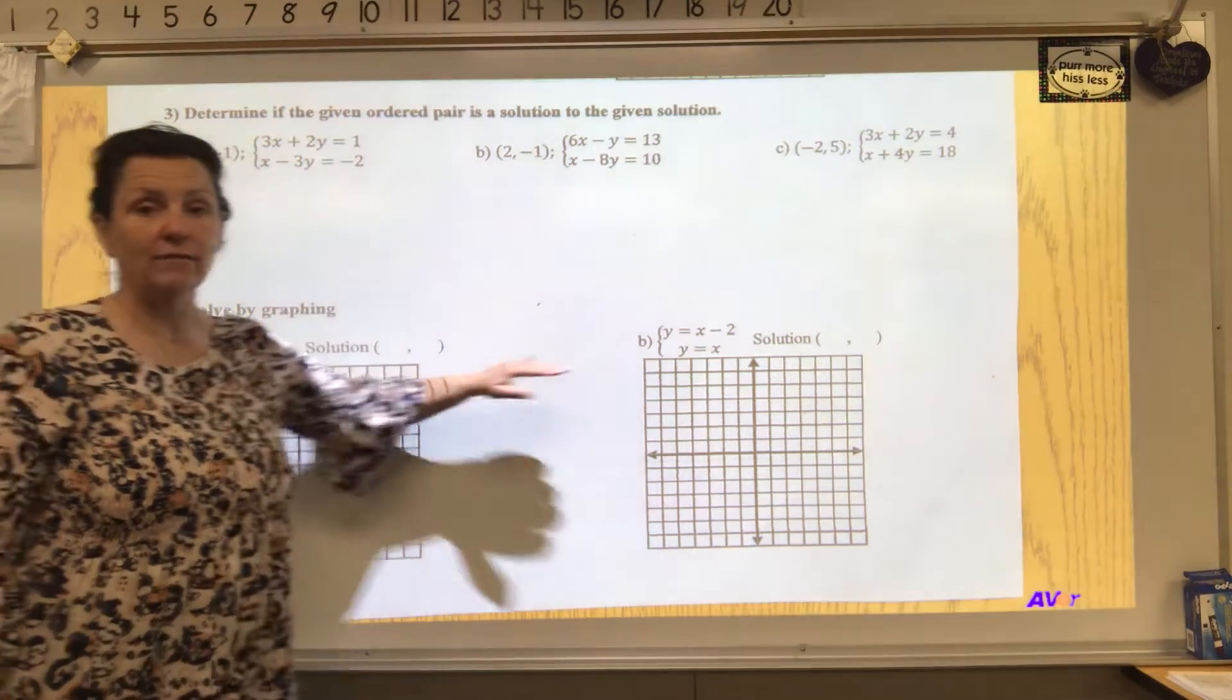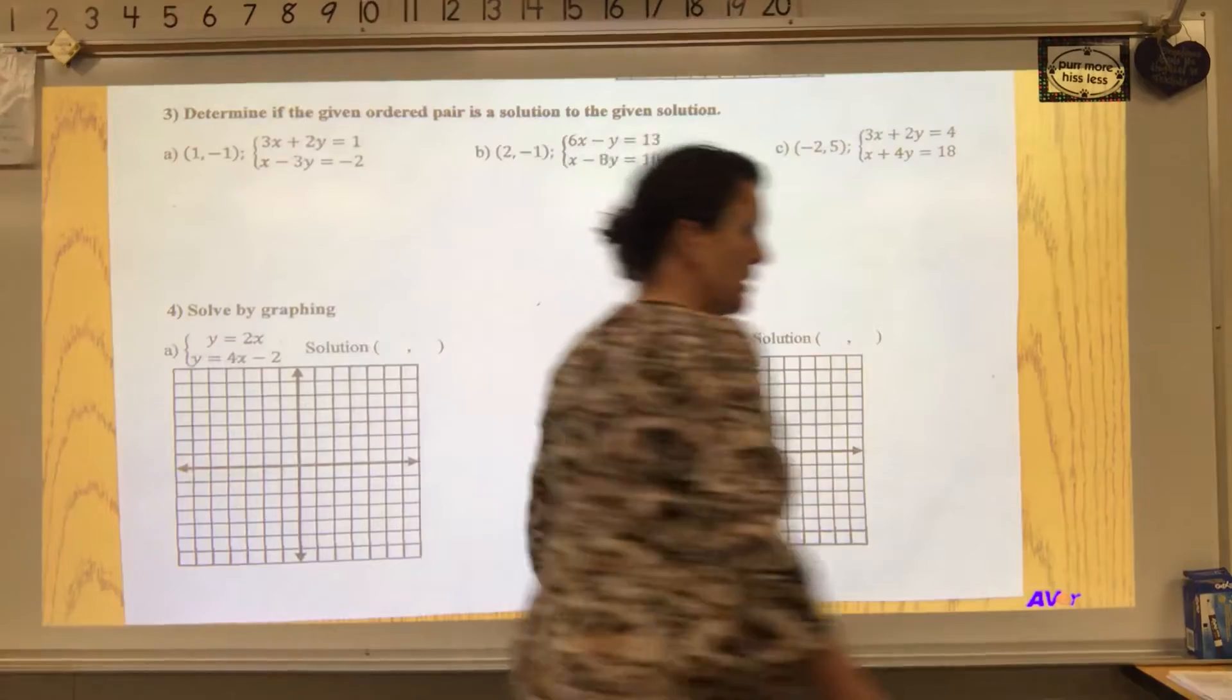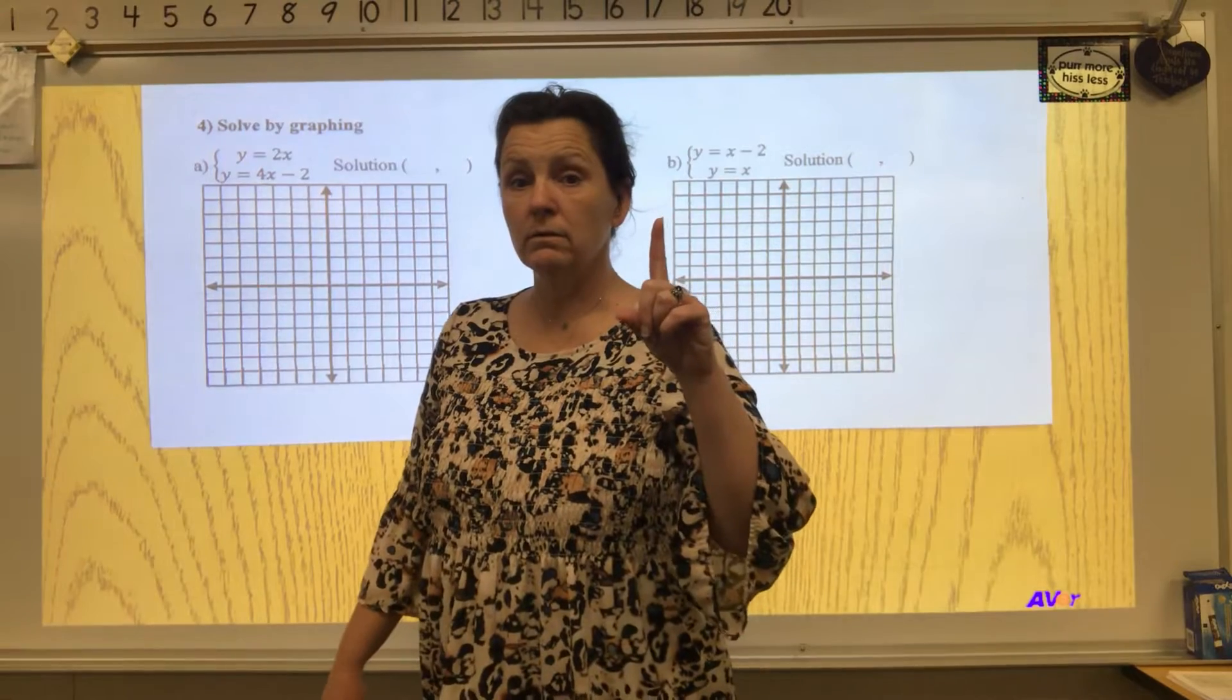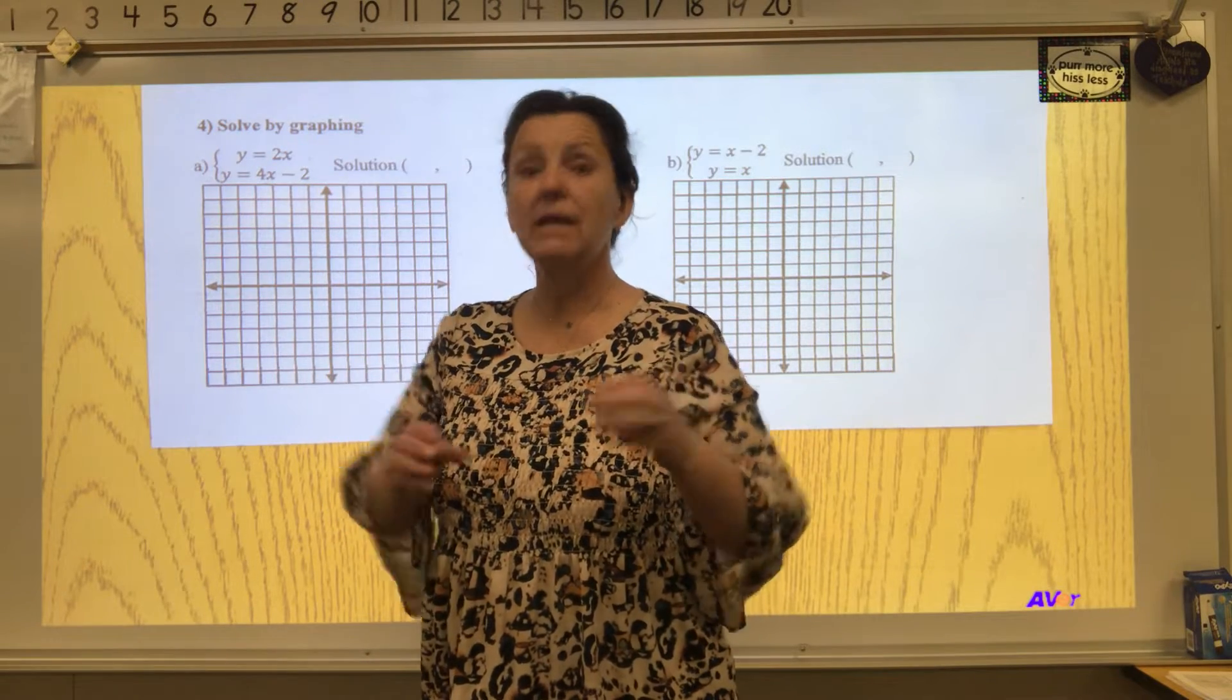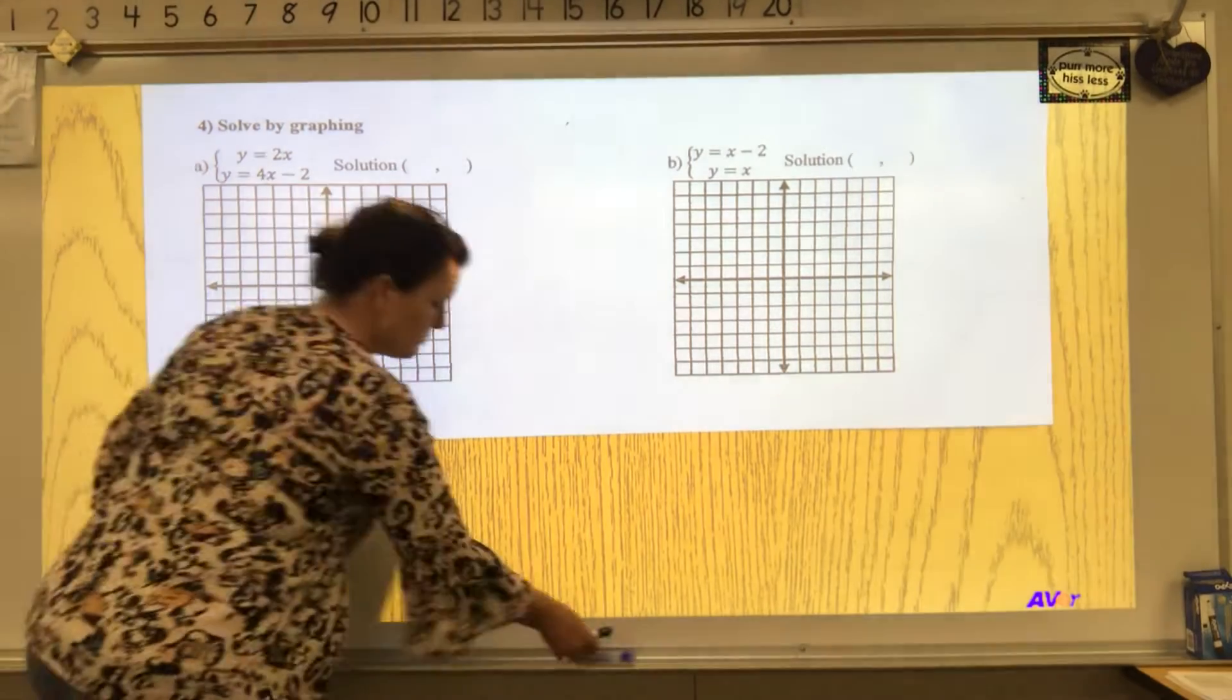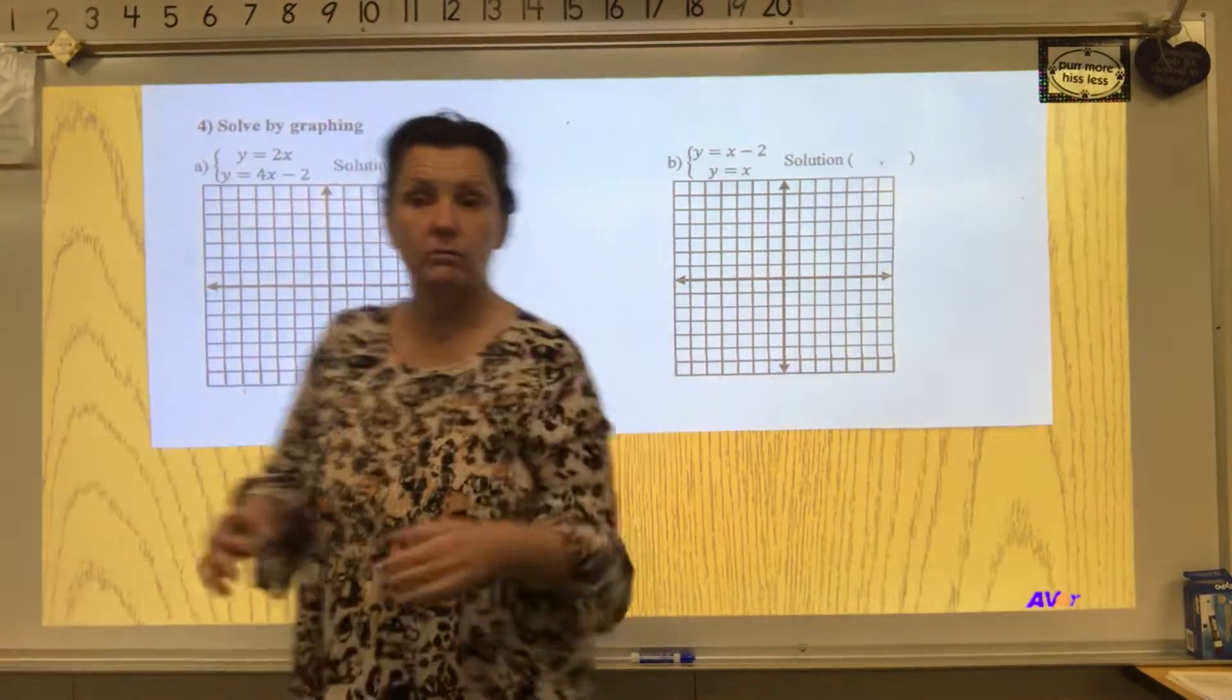I like to start with the graphing first. I'm going to graph. Now remember there's only three possibilities: they could intersect in one point, no points, or all points. Let's make a prediction.